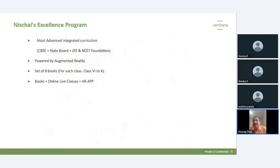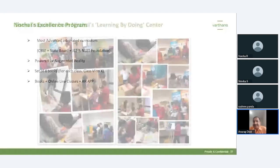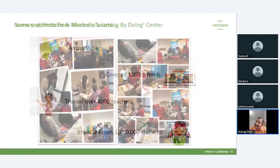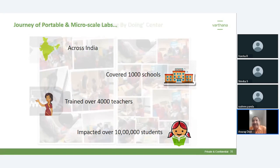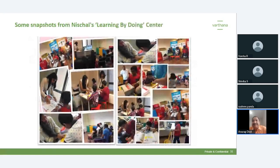Our second solution is called the Learning by Doing Center. This is for schools that want to set up a lab in a traditional dedicated room. The Learning by Doing Center incorporates all four labs — math, physics, chemistry, and biology — in one single room. We guide the school on how to lay out all four labs' equipment in that room. In addition, we also provide more advanced labs for robotics, constellation, and similar advanced learning activities for students. However, this solution does require a physical room to be set up.